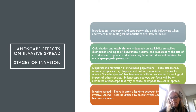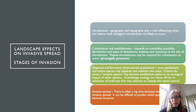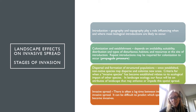Colonization and establishment often depends on the availability, suitability, and distribution of habitats, types of disturbances, and resources at a site of introduction. It's not enough for the organism just to be introduced — often it takes many introductions in one place for establishment or colonization to occur. Repeat introductions are generally required, and it takes time. In most introductions, colonization won't result, but if enough introductions happen with sufficient frequency, there is opportunity for interbreeding and establishment of a population.